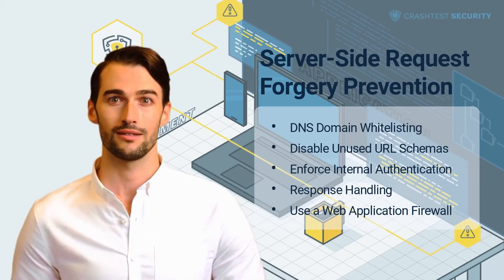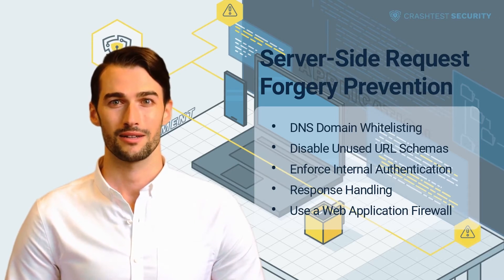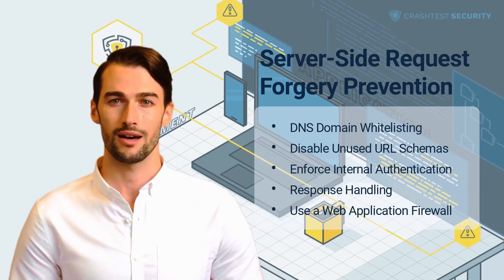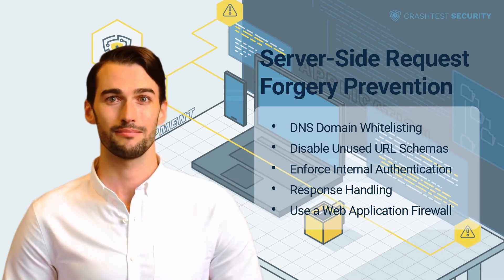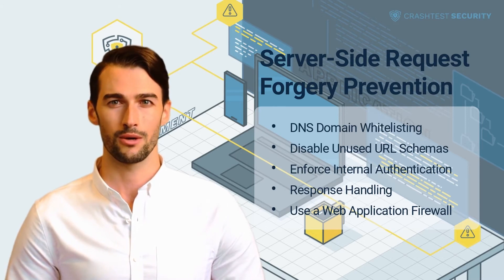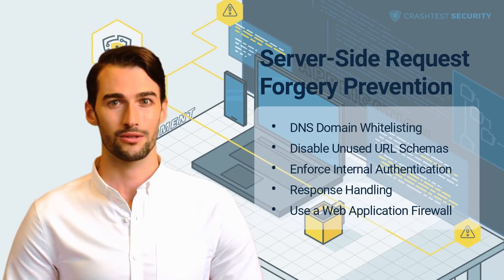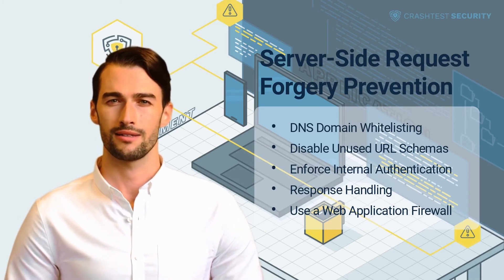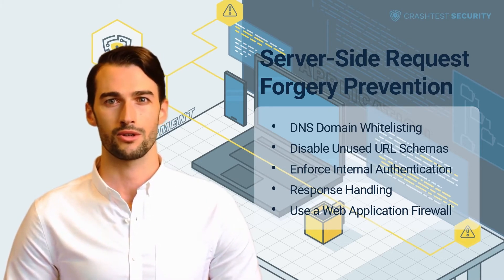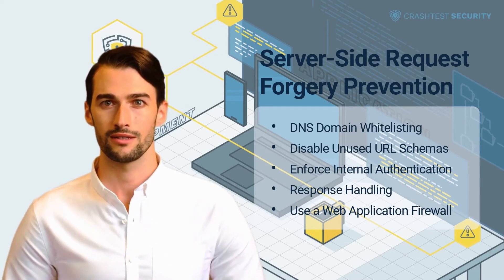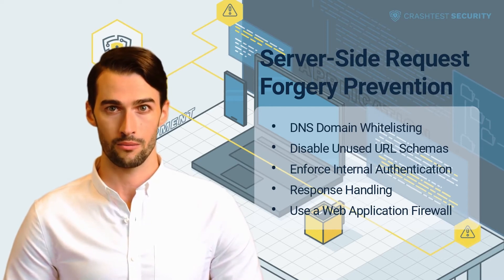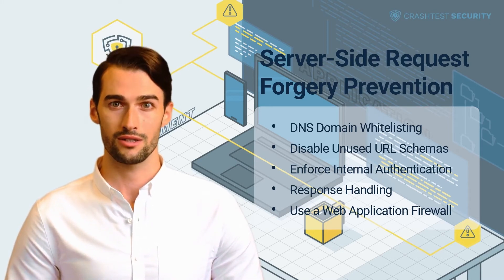An industry best practice is to use HTTPS, as it adds a layer of security and trust to the network, disallowing hackers from accessing resources even after gaining access to the web application. Enforce internal authentication. Most web systems do not require users to authenticate for internal services like MongoDB, Memcached, Elasticsearch, Redis, etc. In the absence of appropriate authentication mechanisms, attackers may craft malicious server-side requests targeting such susceptible services. Enforcing authentication for all services, including those within the local network, is recommended to safeguard sensitive information and assets.